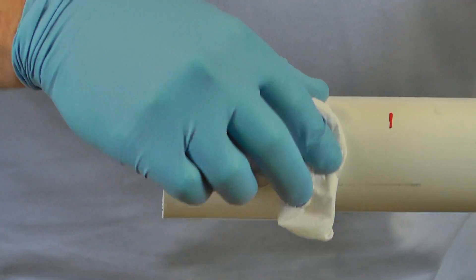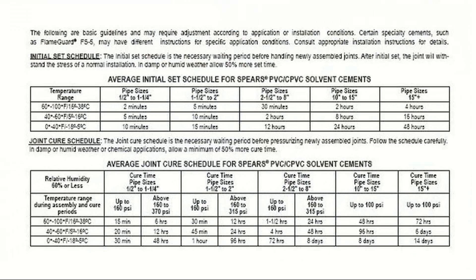If necessary, wipe off excess solvent cement from the pipe and socket. Now that your connection is complete, remember to observe the proper set and full cure times according to the joint size, solvent cement type, and ambient hot cold temperatures.